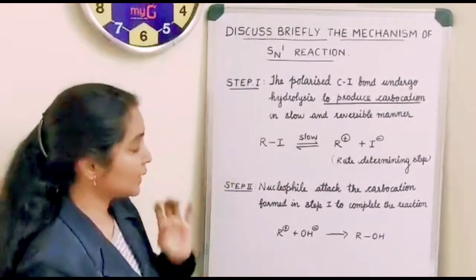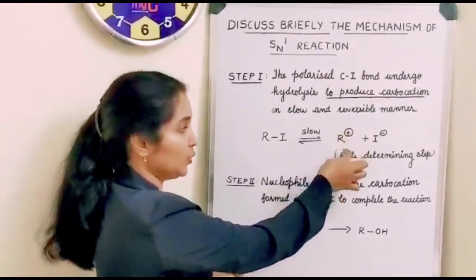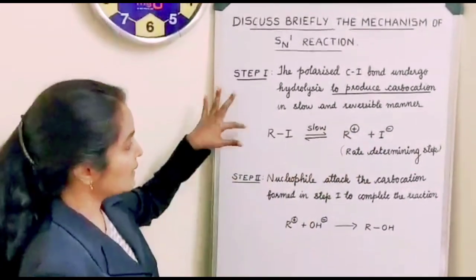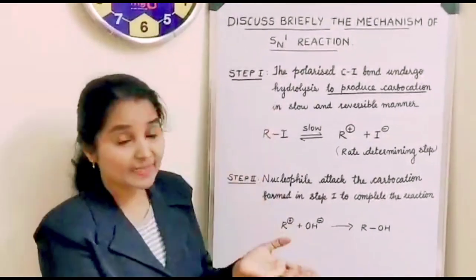This R can be anyone: primary, secondary, or tertiary. So you know that tertiary carbocation is the most stable. This alkyl halide will be undergoing hydrolysis.